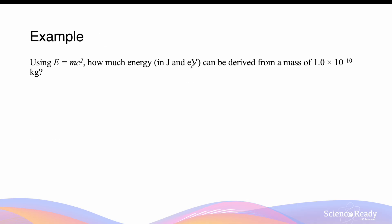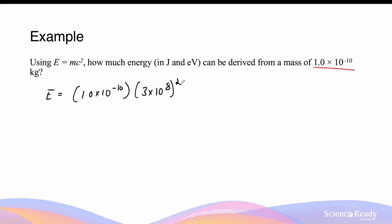How much energy in joules and electron volts can we derive from a mass of 1.0 × 10⁻¹⁰ kilograms? Since the mass is available in kilograms, we can substitute this number into our equation using c as 3 × 10⁸ squared. This yields a value of 9.0 × 10⁶ joules. If we're using the mass in kilograms, then the energy we calculate will be in joules.